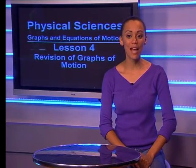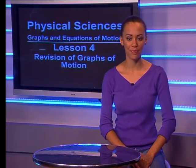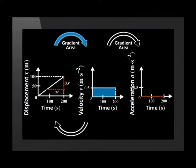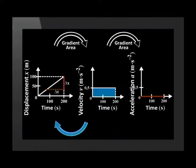We can summarize this by putting all three graphs together. We use the gradient of the displacement versus time graph to calculate the velocity, and the gradient of the velocity graph to calculate the acceleration. We use the area of the velocity versus time graph to calculate the displacement at that point in time.